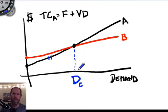In contrast, if the demand quantity was greater than D of C, then we would choose manufacturer B, because that line is lower.